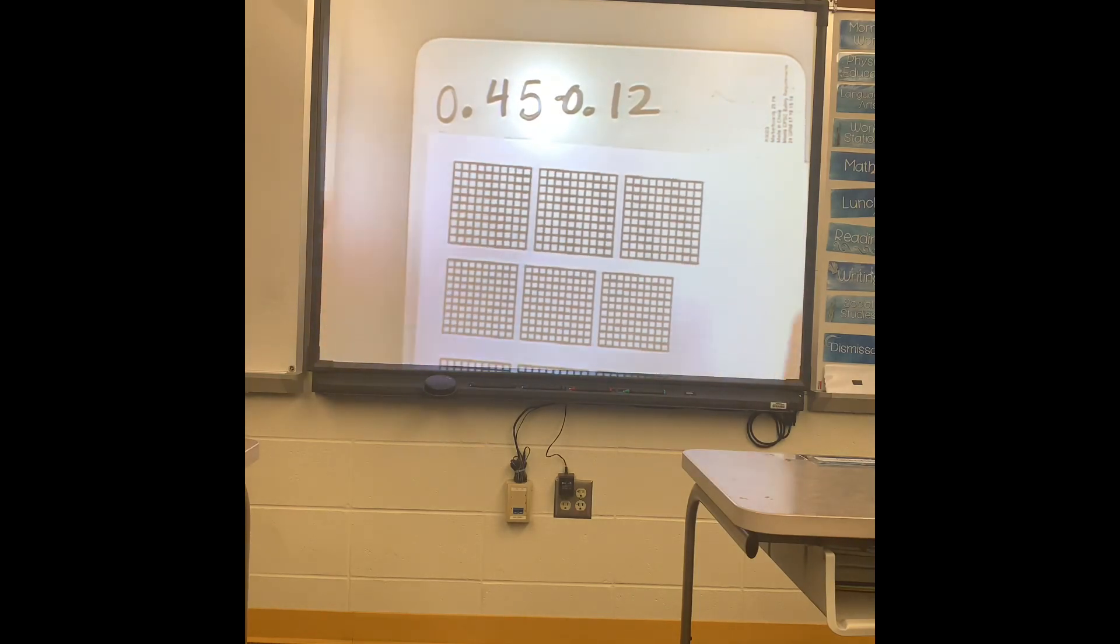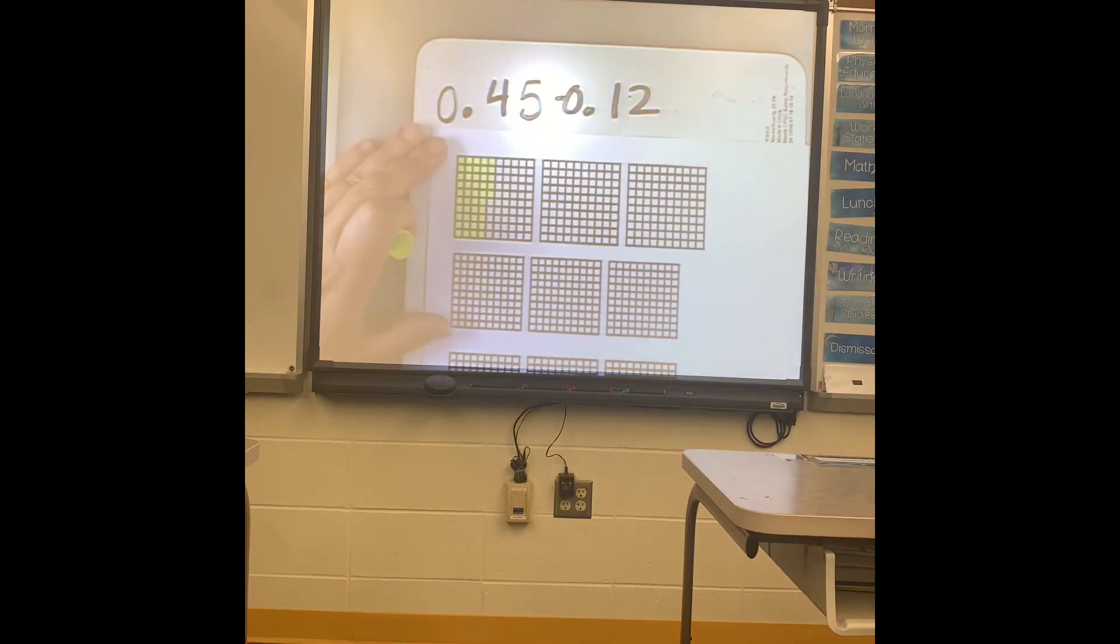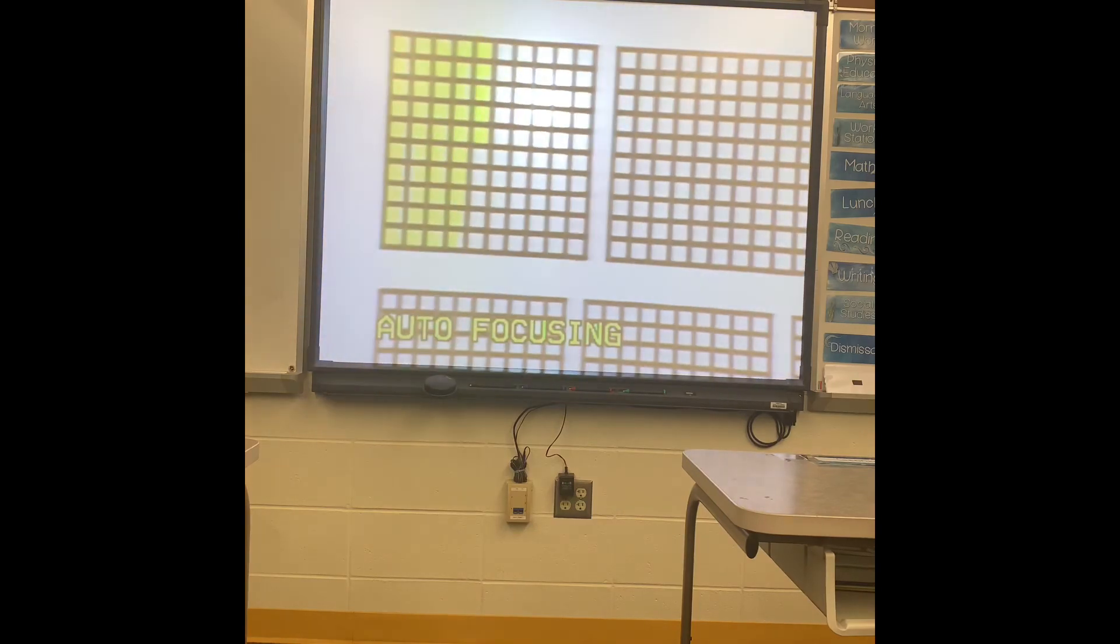Let's jump on over to subtraction because subtraction is usually a tad bit harder. Not too bad though. So we'll start off easy. 0.45 minus 0.12. Once again, shade in your first number. So I have 45. So 10, 20, 30, 40, and then five. One, two, three, four, five. So there is my 45.